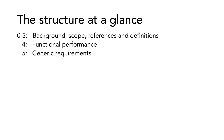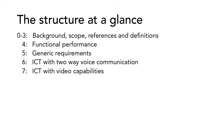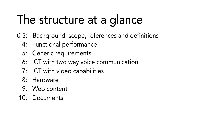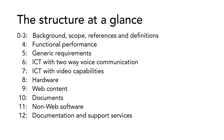The technical requirements start in chapter 5, where you will find the generic requirements that apply to all ICT. In chapter 6, you find requirements on ICT with two-way voice communication. In chapter 7, there are requirements on ICT with video capabilities. Chapter 8 contains requirements on hardware. Chapter 9 has requirements on web content. In chapter 10, you have requirements on documents. Chapter 11 has requirements on non-web software. Chapter 12 contains requirements on documentation and support services. And chapter 13 has requirements on relay and emergency services.